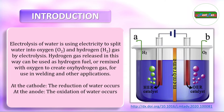Electrochemical water splitting is a process that uses an electrical current to split water molecules into hydrogen and oxygen gases through a series of reactions occurring at specialized electrodes. It is a key technology for producing clean and sustainable hydrogen fuel, as hydrogen can be used as an energy carrier and clean fuel source for various applications. The electrochemical water splitting process typically takes place in an electrolyser which consists of two electrodes submerged in an electrolyte solution.